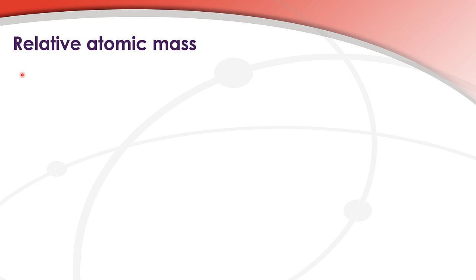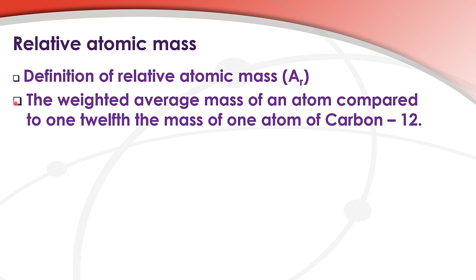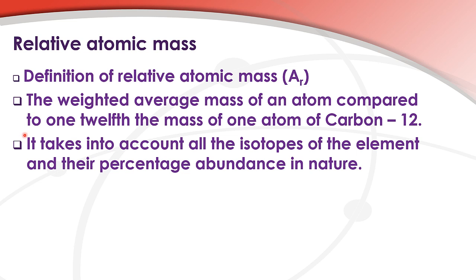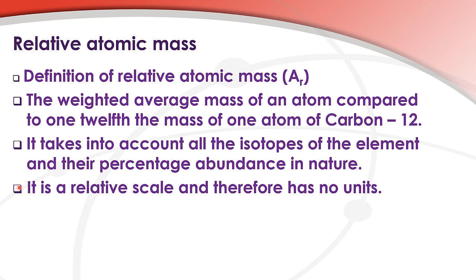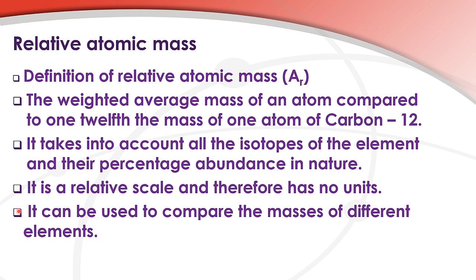Relative atomic mass. The definition of relative atomic mass, which is given the symbol A_R, is the weighted average mass of an atom compared to 1/12th the mass of an atom of carbon-12. The relative atomic mass takes into account all the isotopes of the element and their percentage abundance in nature. It is a relative scale and therefore has no units. It can be used to compare the masses of different elements.